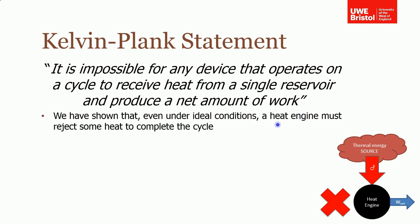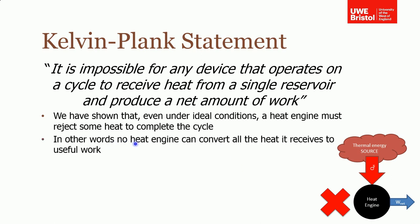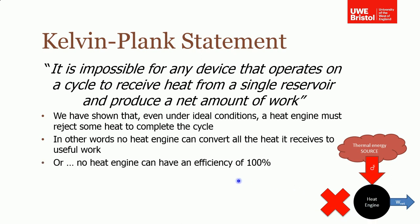We showed an example in the first section where even under ideal conditions a heat engine must reject some heat to complete the cycle, because for the working fluid to operate in its cycle it must return back to its original state. In other words, no heat engine can convert all the heat that it receives into work. No heat engine can have an efficiency of 100%.